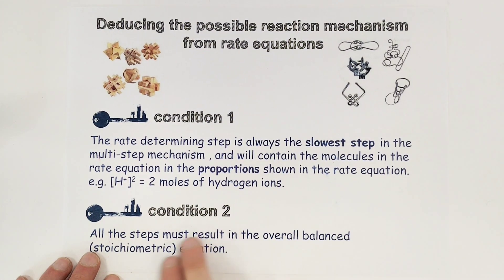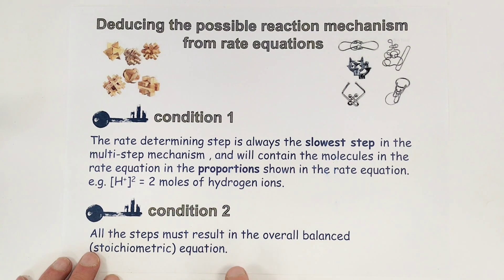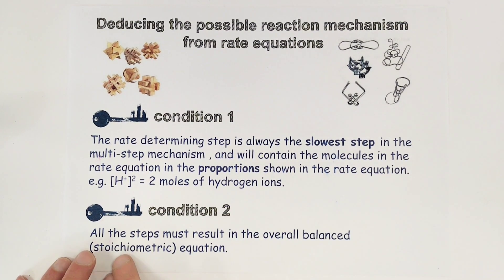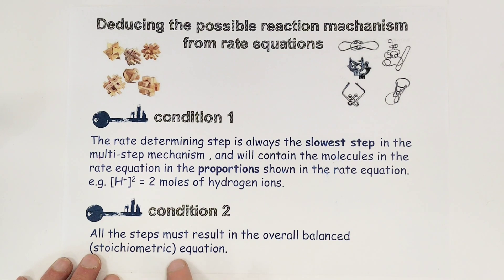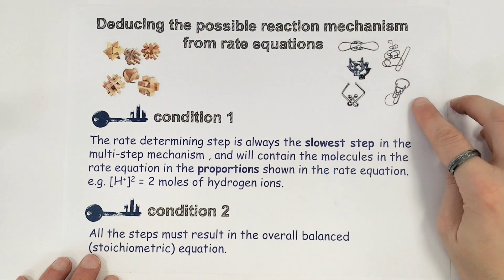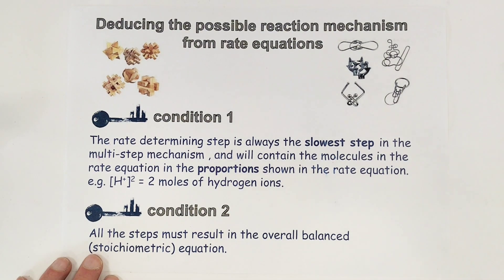The second condition is that all the steps in your multi-step mechanism must eventually equate to the overall balanced or stoichiometric equation given to you in the question. Effectively these are like a puzzle to be solved. I'm going to take you through the logic of how to solve one of these questions now.